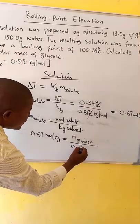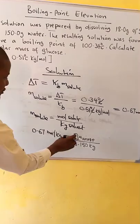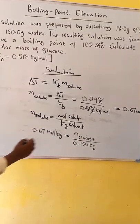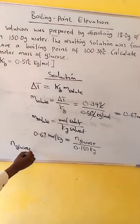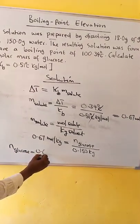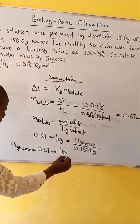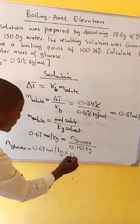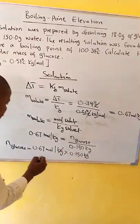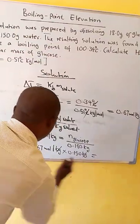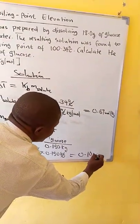To find the number of moles of glucose, we cross multiply. Moles of glucose equals 0.67 mol per kg times 0.150 kg. The kg cancel, and when we multiply we get 0.1 mol. So we have 0.1 mol of glucose.